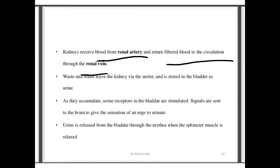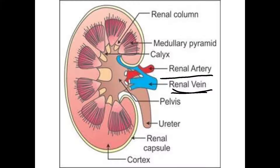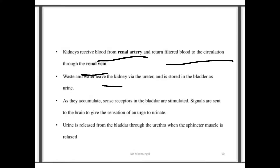Waste and water leave the kidney through the ureters and are stored in the bladder as urine. As urine accumulates, receptors in the bladder are stimulated and signals are sent to the brain, giving the sensation and urge to urinate. Urine is released from the bladder through the urethra when the sphincter muscle is relaxed.